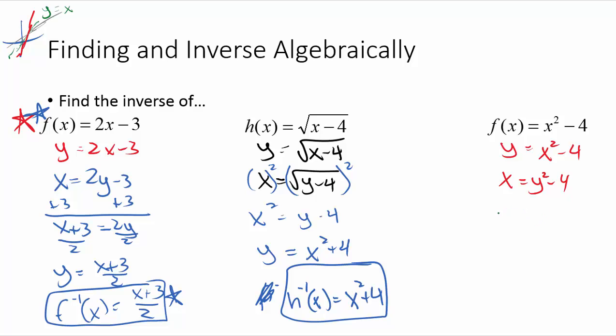And then what I'm going to do is add four to both sides, so this would be x plus four equals y squared, and then we're going to square root both sides.